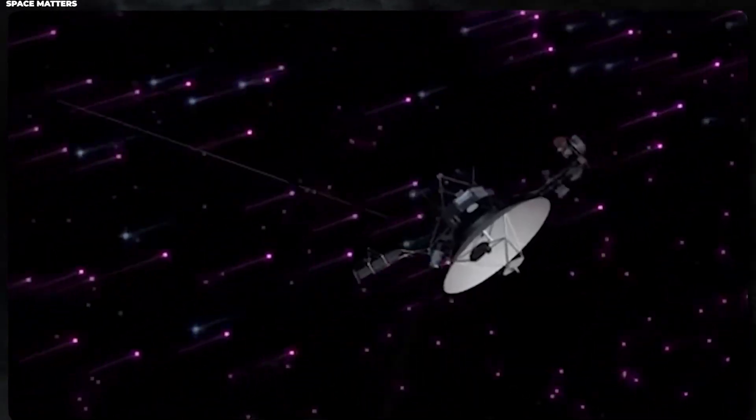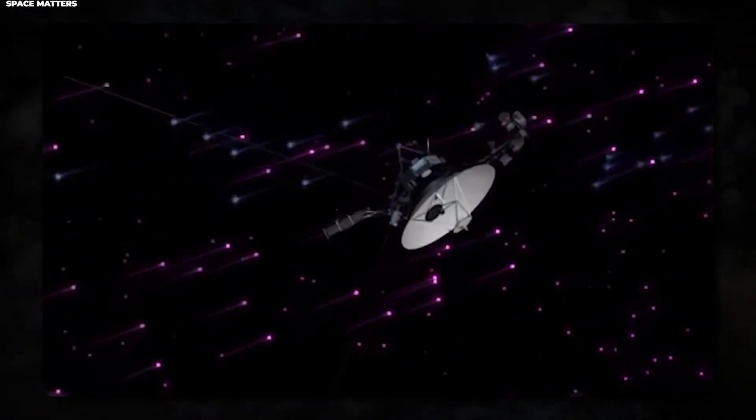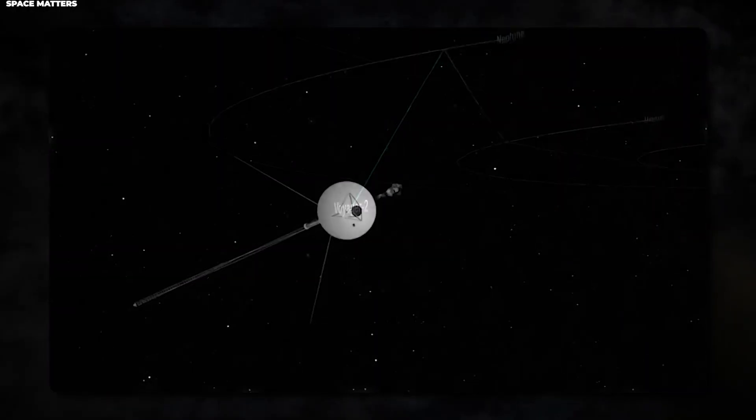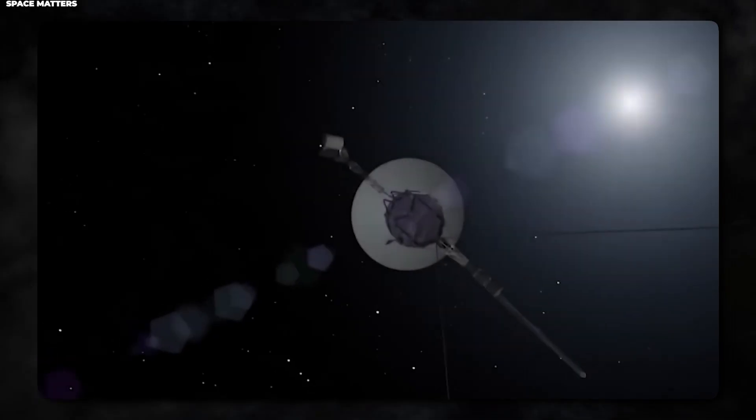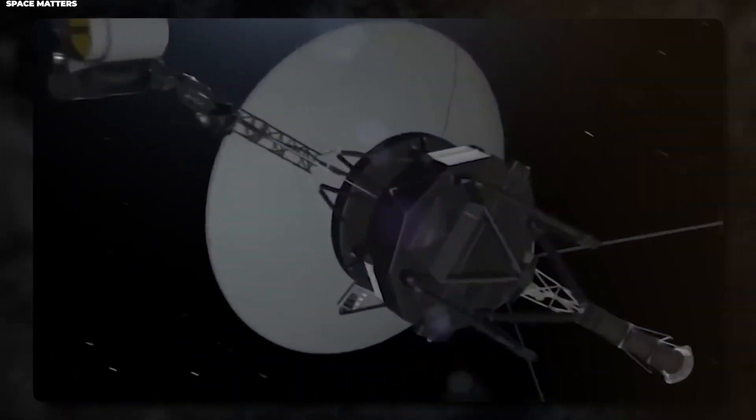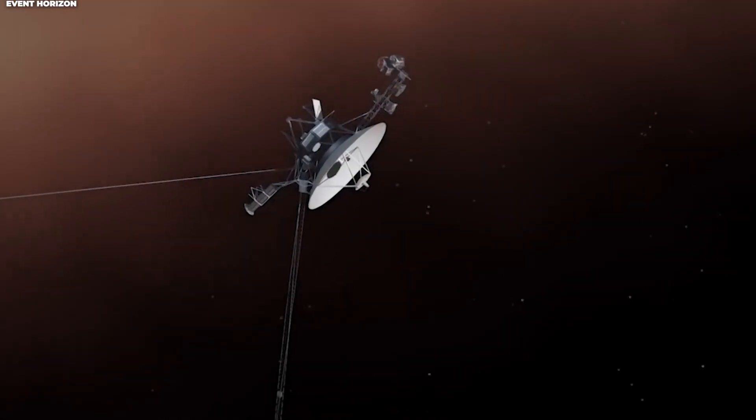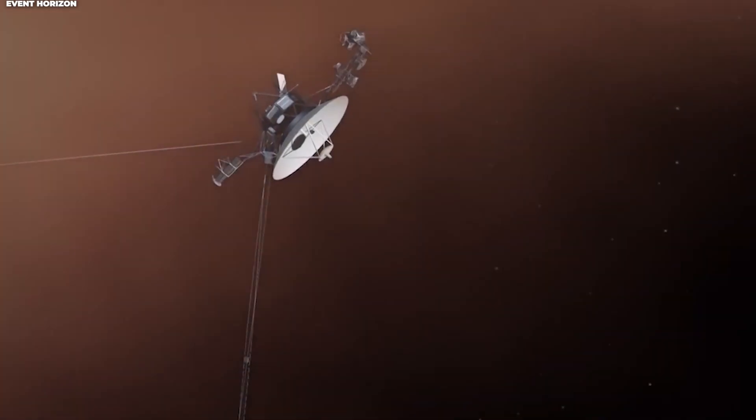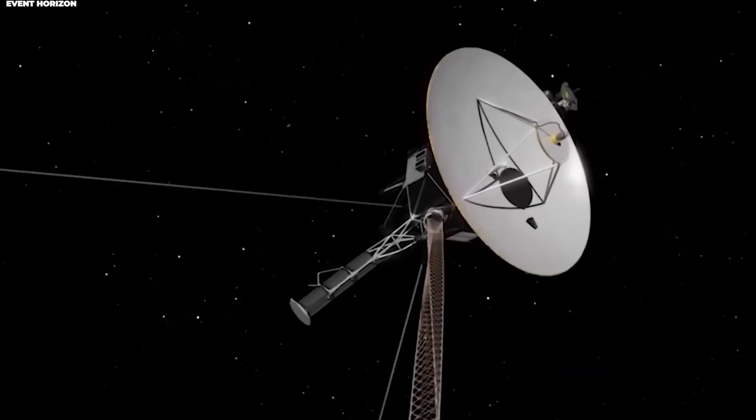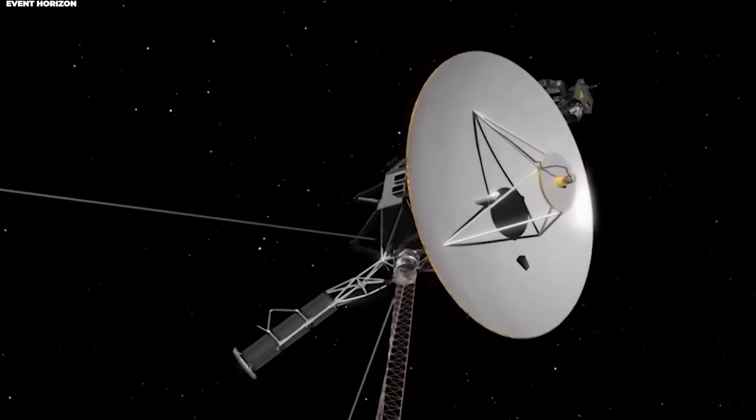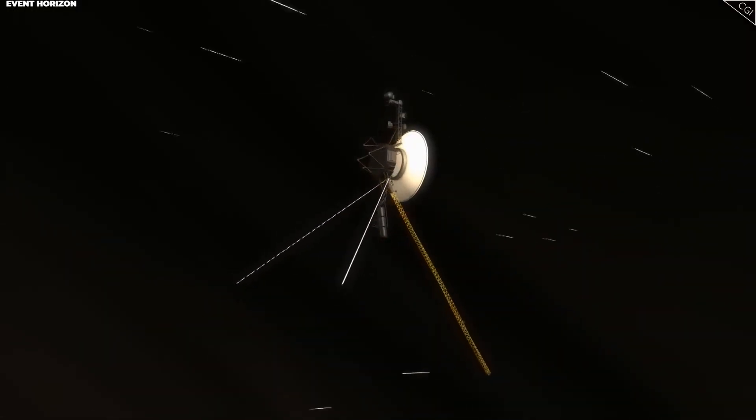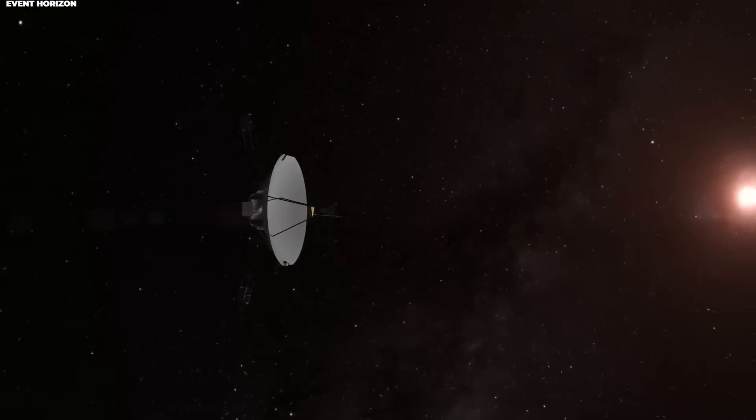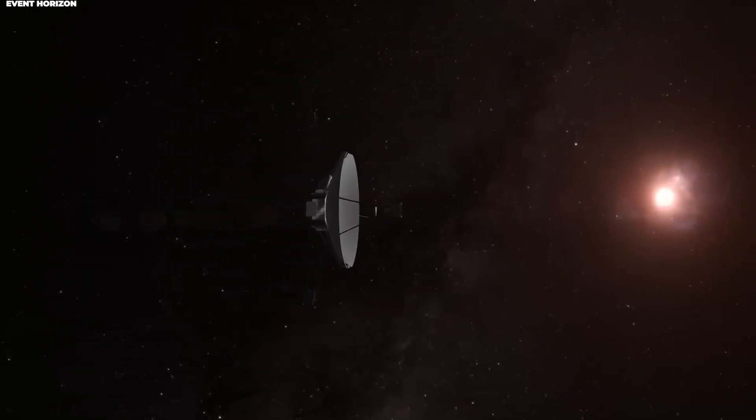First, Voyager 1's instruments are old. The spacecraft was designed in the 1970s, and while it's still functional, it doesn't have the sophisticated cameras and spectrometers that modern spacecraft carry. Second, power is limited. Voyager 1 runs on plutonium-238 radioisotope thermoelectric generators, which decay over time, producing less and less power. The team has had to shut down various instruments over the years to conserve energy.